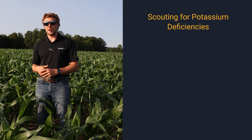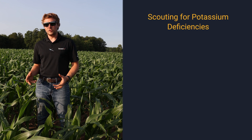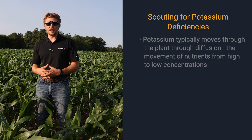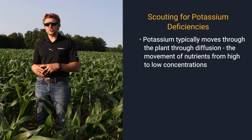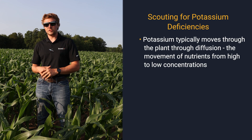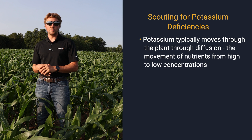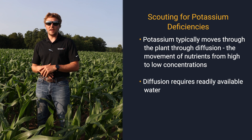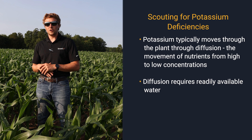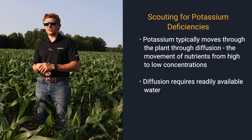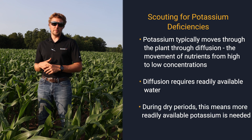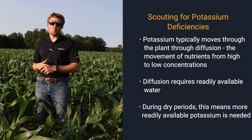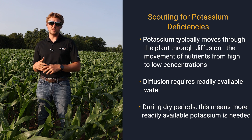90% of potassium uptake uses the process of diffusion, which is the net movement from an area of large concentration to smaller concentration. This is important because we have to have water in order to get that potassium into the plant. In dry periods, we're going to have to rely on higher concentrations of readily available potassium to get into the plant, since we don't have that water to move it in there with diffusion.